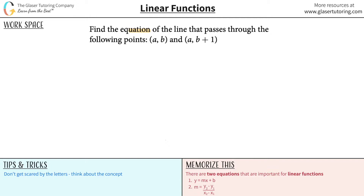Find the equation of the line that passes through the points (a, b) and (a, b+1). Now a question like this — I know it's like, oh my goodness, why are they doing this to me? Understandable, I totally empathize with you. However, what I want you to realize is that this question is not hard. It's the same procedure as we would approach any such problem.